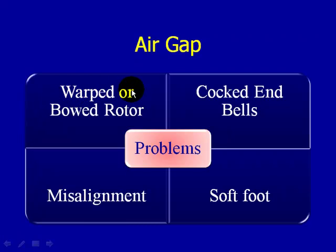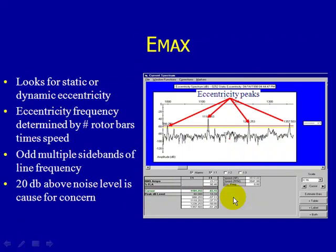Some of the problems that can cause an air gap issue include a warped or bowed rotor. If you have motors sitting in a warehouse for the last year or two years, gravity takes effect and could be bowing those rotors. It's important to have a program in place to rotate the shaft every quarter or every six months so gravity doesn't focus on one area. You could also have cocked bearings, misalignment, or soft foot — any one of these conditions could cause a potential eccentricity issue.